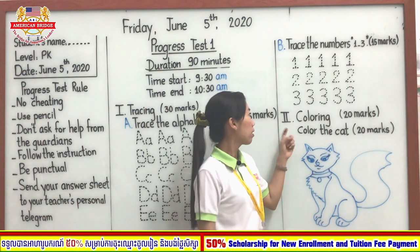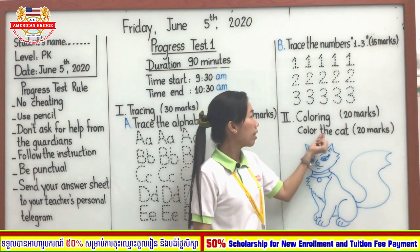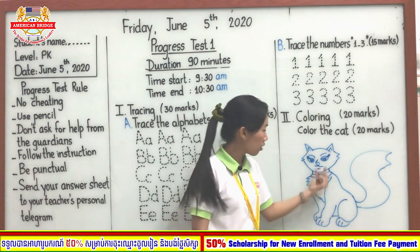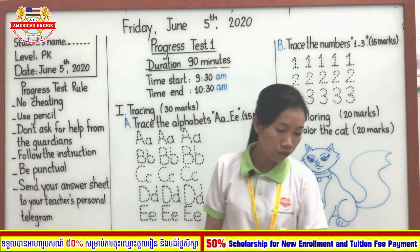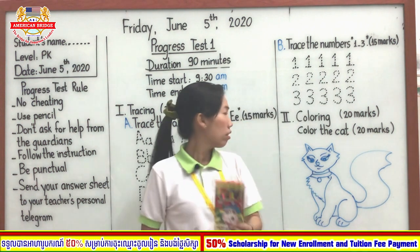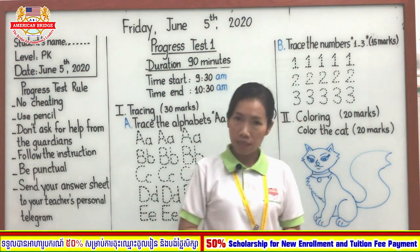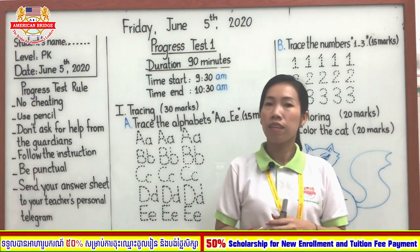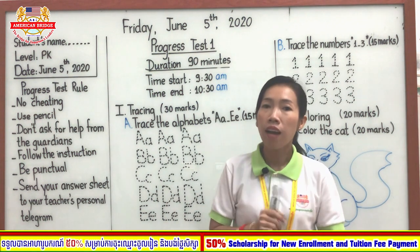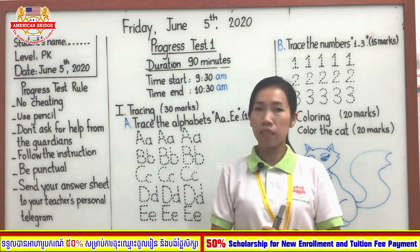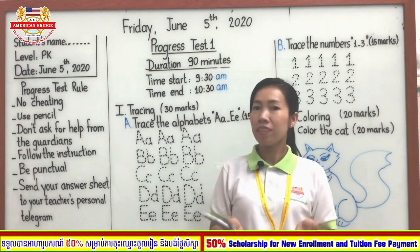The last part is coloring — you will get 20 marks. Color the cat using your color pencil. After you finish your progress test, don't forget to take the photo and send it to your teacher's personal Telegram, not in the group. If you have questions, you can ask your teacher in the group or personally. Goodbye everyone, enjoy your progress test!